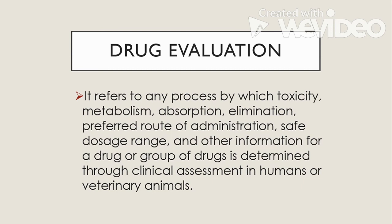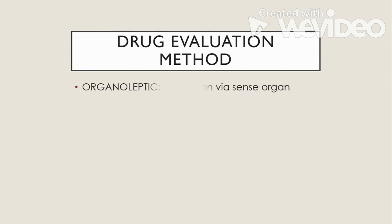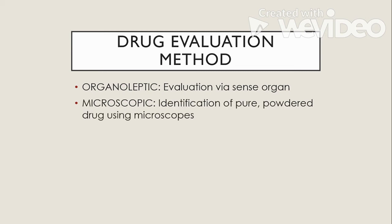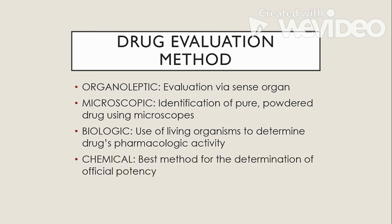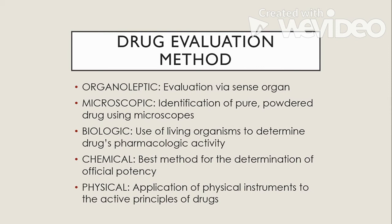We have different methods for drug evaluation. First is organoleptic — evaluation via sense organ, using our senses such as smelling, seeing, and touching. We also have microscopic: identification of pure powder drug using microscopes. Biologic: the use of living organisms to determine a drug's pharmacologic activity. Chemical: the best method for the determination of official potency. And lastly, physical method: an application of physical instruments to the active principles of drugs.